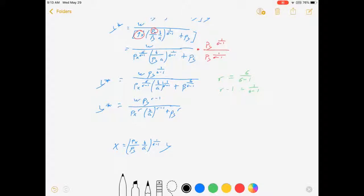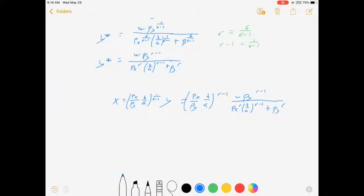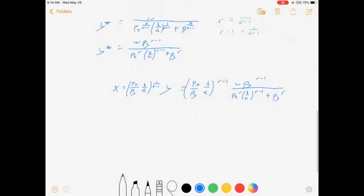So this thing is equal to (px/py)(b/a)^(r-1) times y, which is w·py^(r-1) over px^r times (b/a)^(r-1) plus py^r. At this point, it's just algebra. I don't think it's going to be a good use of your time for me to go through this. There's no fancy multiply by 1 tricks or anything. I'm just going to give you the answer.